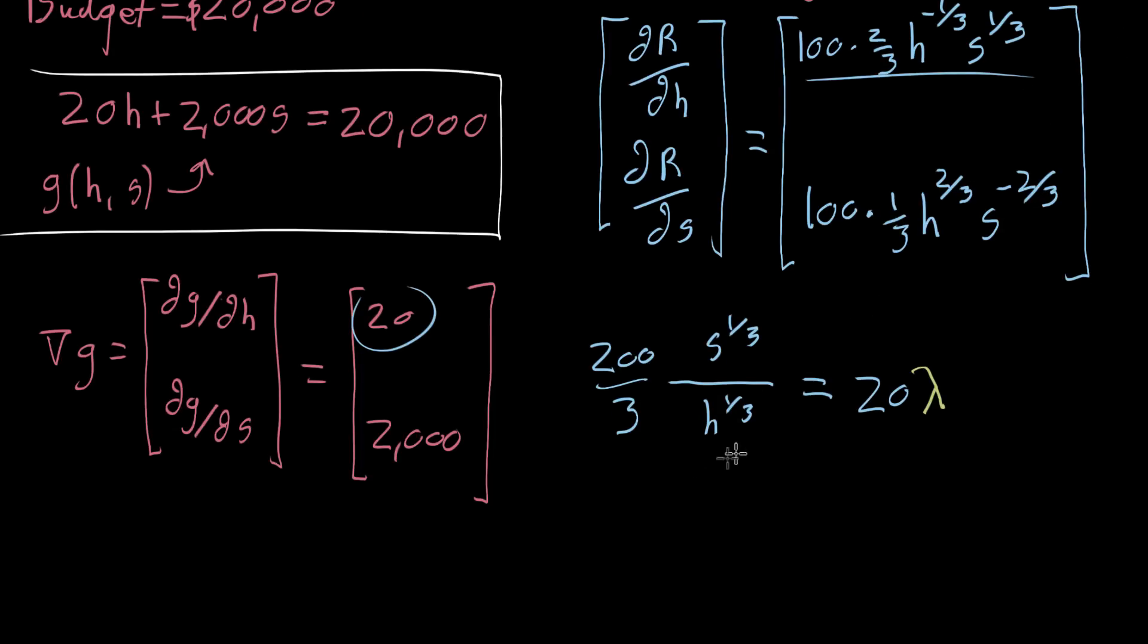And then the second one, I'll go ahead and do some simplifying while I rewrite that one also. That's going to be 100 thirds, and then h to the 2 thirds, so times h to the 2 thirds, divided by s to the 2 thirds, because s to the negative 2 thirds is the same as 1 over s to the 2 thirds. All of that is equal to 2,000 times lambda. And the important thing is it's that same lambda, because the entire vector has to be proportional. And I think right here is probably a pretty good point to stop, and in the next video, I'll go ahead and work through the details, and we'll land on a solution.